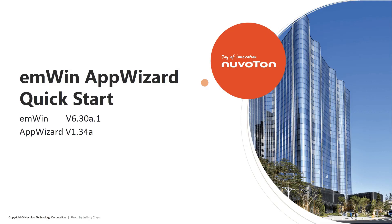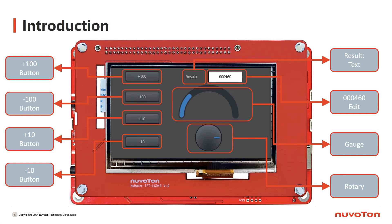Hi everyone, today I will introduce AppWizard. AppWizard is a Windows tool of EANWIN. Users can make a runnable app without coding. We will make a simple HMI app and run on M4 16.7. On the left side, we will utilize four button widgets and calculate the result and show on the right side's editor. On the right side, we will add two new widgets from EANWIN and also add interactions.